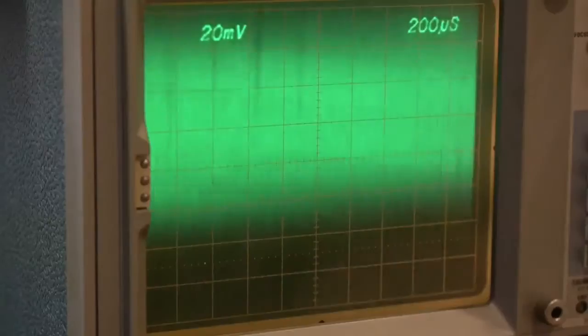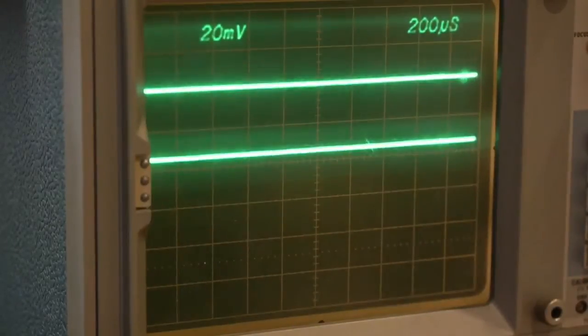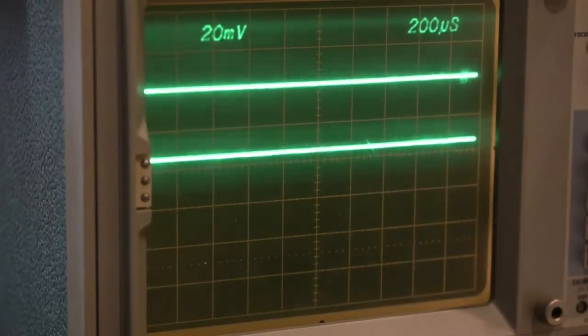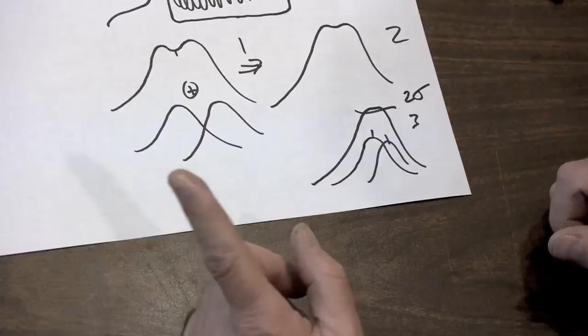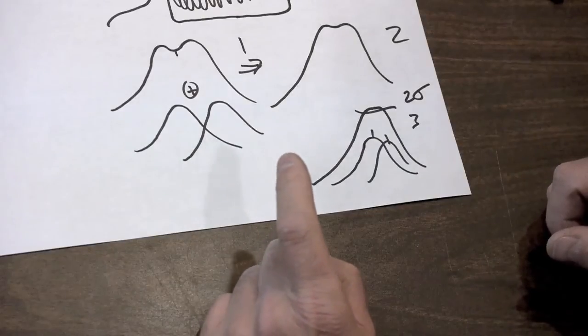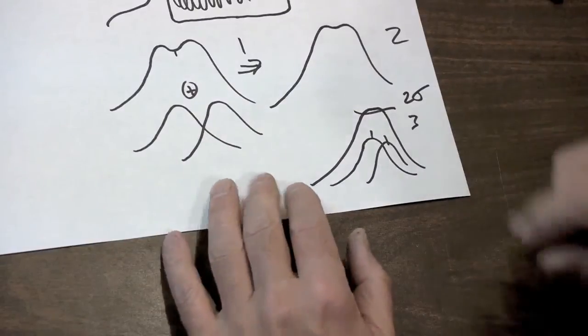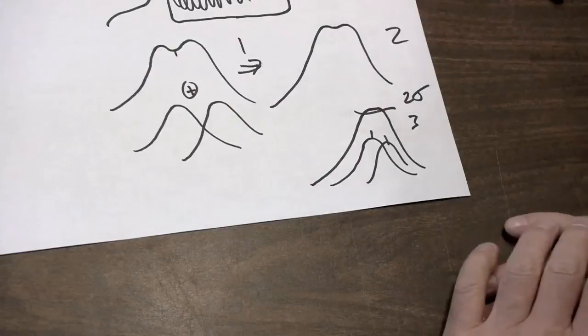So now we set the two traces on ground. I see about 1.6 divisions between the two traces. Well, 20 millivolts per division, that corresponds to 32 millivolts, which is exactly twice the standard deviation. That concludes the demonstration.